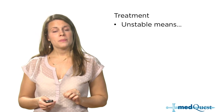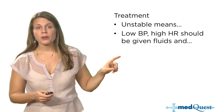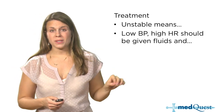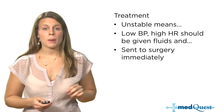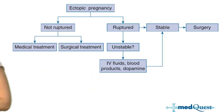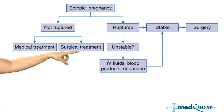For treatment of ectopic pregnancy, if the patient is unstable — meaning low blood pressure and tachycardia — you resuscitate them first and take them immediately to surgery, as you're very concerned about a ruptured ectopic. The treatment algorithm distinguishes ruptured from not ruptured. In patients with an unruptured ectopic where the patient is stable, you can consider either medical treatment with methotrexate injection or surgical treatment with laparoscopy and removal of the ectopic pregnancy.